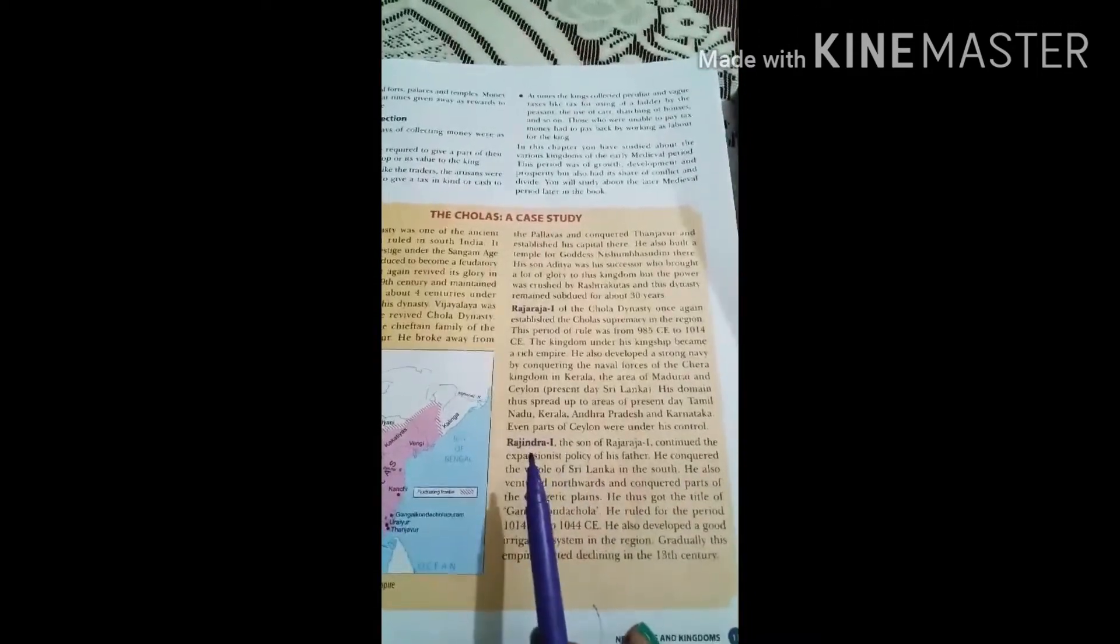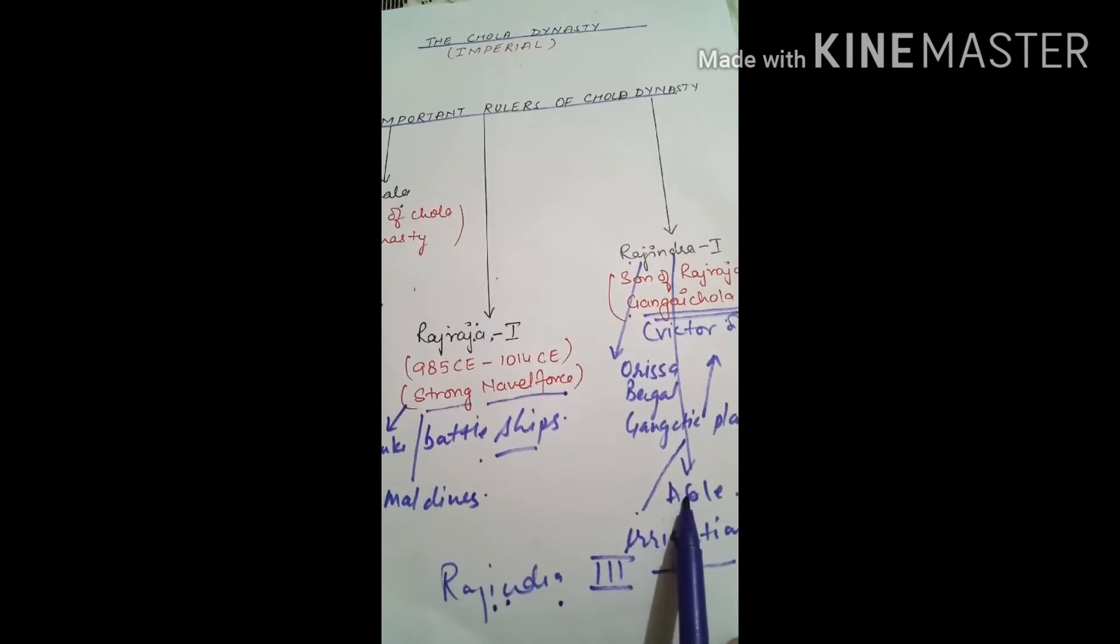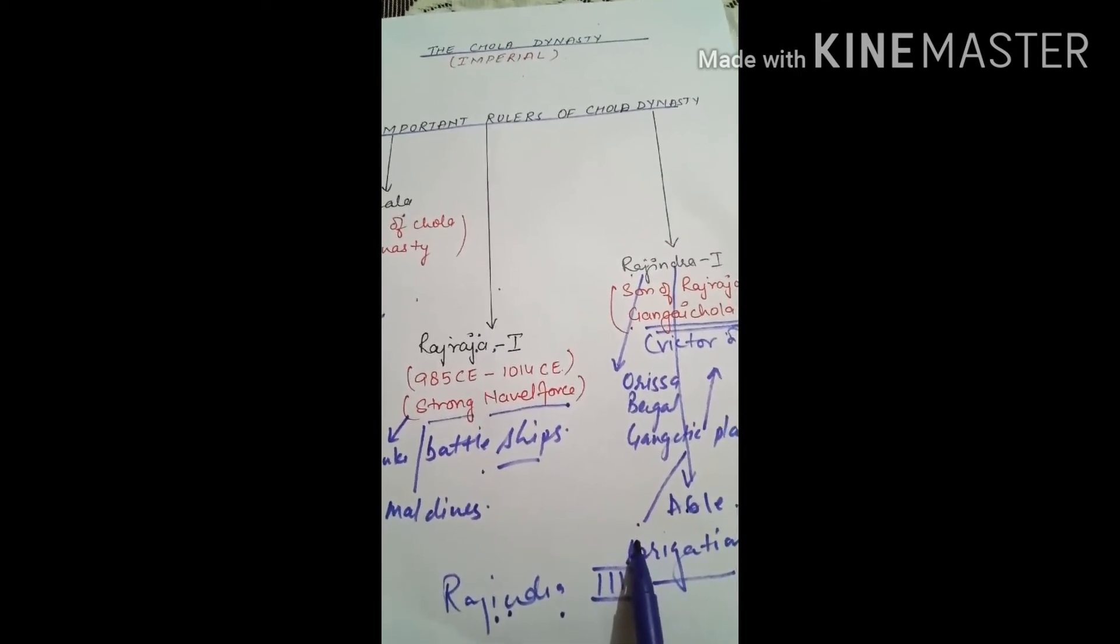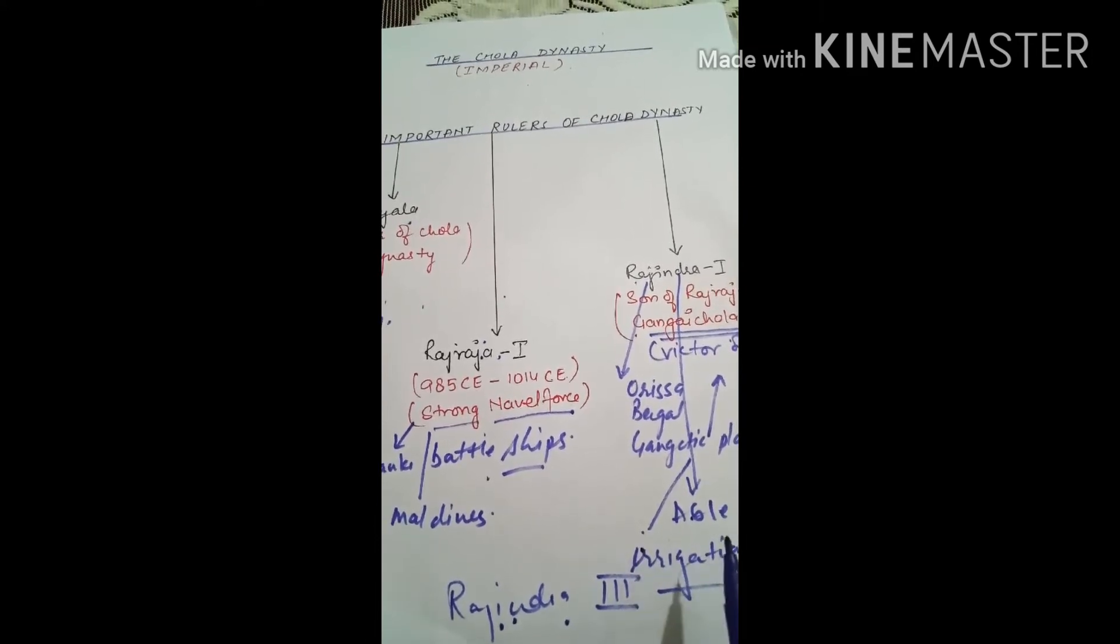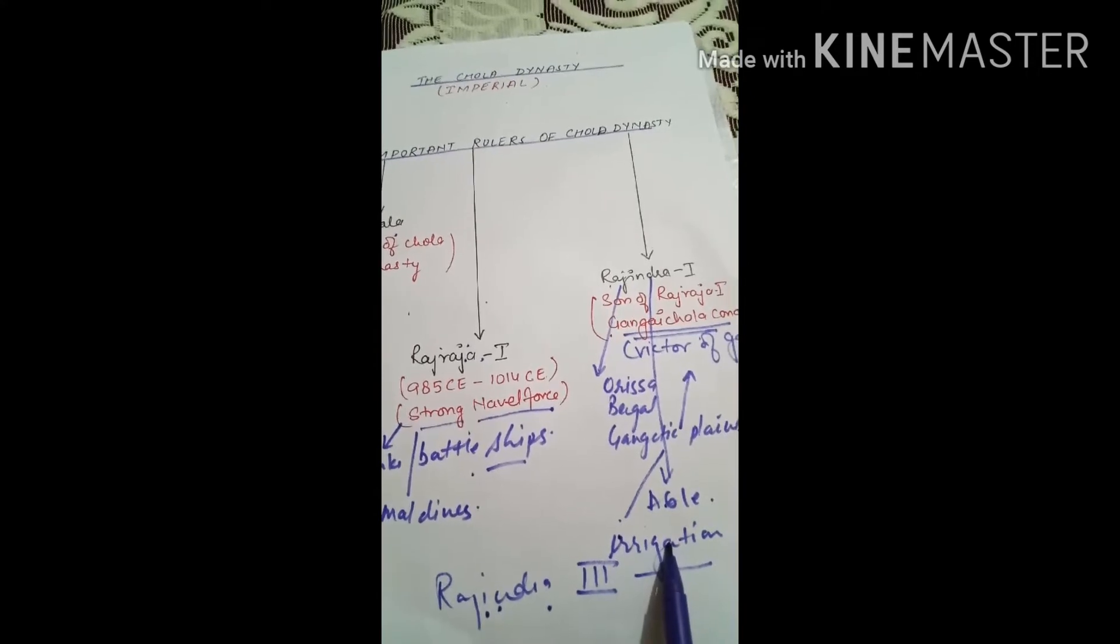Rajendra first was a very able administrator of his time. He gave a new system of irrigation to his fields, and they grew different kinds of crops due to this improved irrigation system.